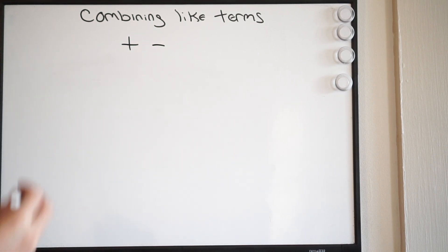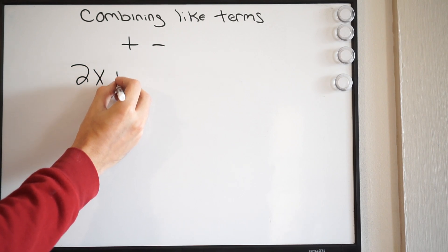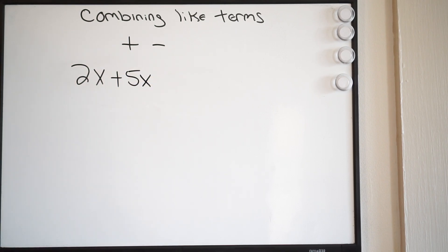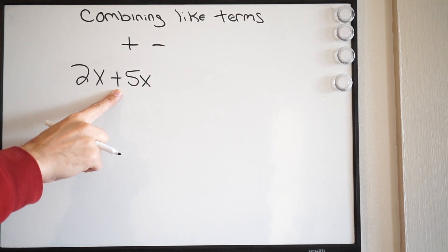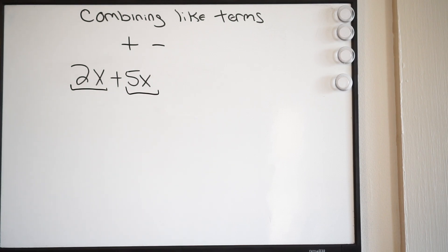So if I had the following here, if I had 2x plus 5x, where are my terms? Well, here's an addition, so that's my separator, so right here is a term, and right here is a term.